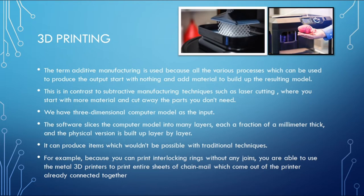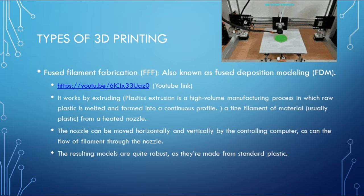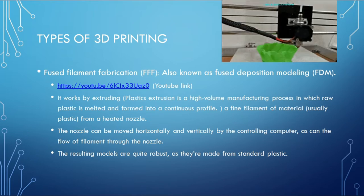Another tool used in physical prototype designing is 3D printing, also called additive manufacturing. The term additive manufacturing is used because the various processes start with nothing and add material to build up the resulting model. This is in contrast to subtractive manufacturing techniques such as laser cutting and CNC milling, where you start with more material and cut away the parts you don't need. 3D printing can produce items which wouldn't be possible with traditional techniques — for example, interlocking rings without any joints.